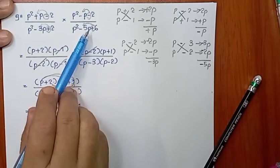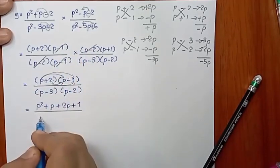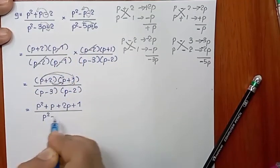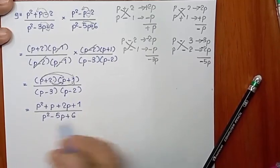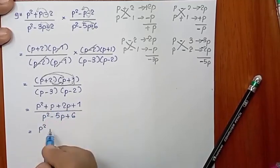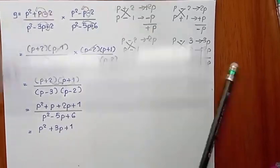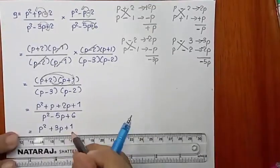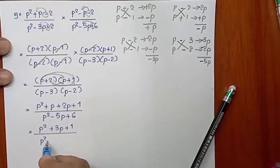Here we go. If you want to see this one, you can see this one. This is b squared minus 5b plus 7. This is b squared minus 5b plus 7. This is b squared plus 3b plus 1. This is b squared minus 5b plus 7.